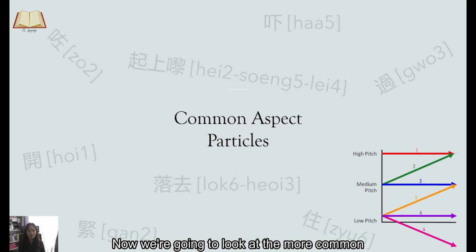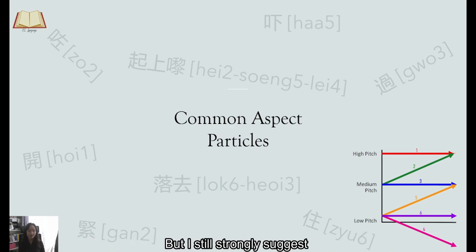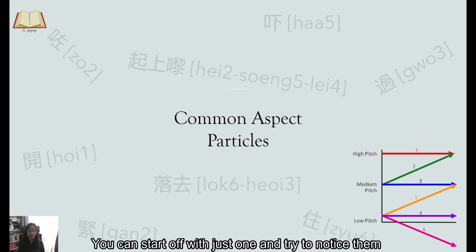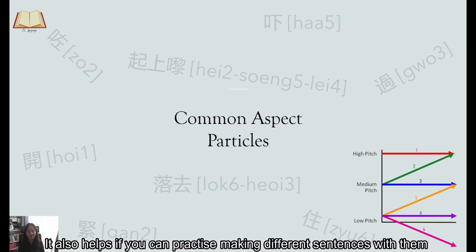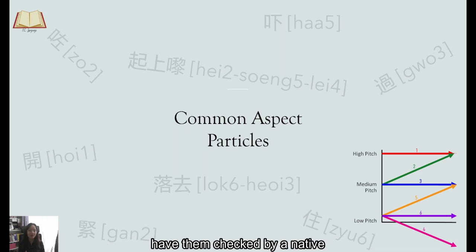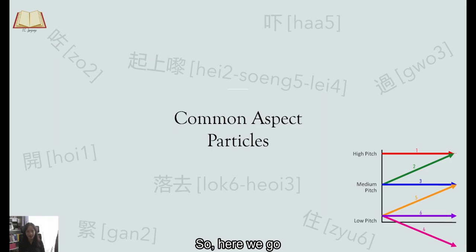Now, we're going to look at the more common and the most important aspect particles. I'll try my best to explain it and draw parallels with English but I still strongly suggest that you actively pay attention to them while you're watching Cantonese videos and this is something that's integral as part of your language learning journey. You can start off with just one and try to notice them more and more as you get along and understand the context they are used in. It will also help if you can practice making different sentences with them, have them checked by a native or a teacher so you know whether you're using them correctly or not. So here we go.